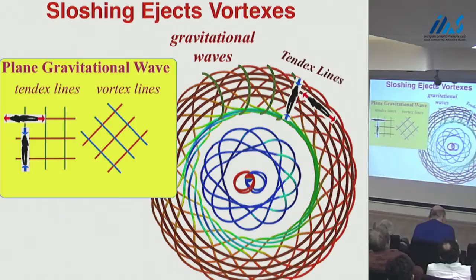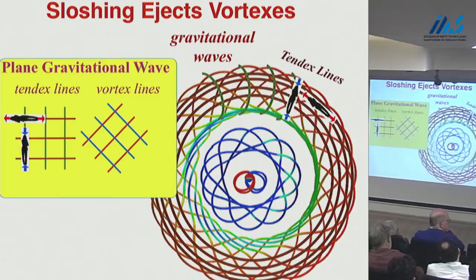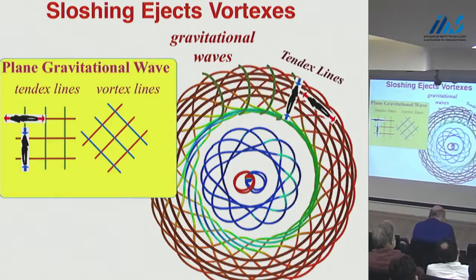Are these two fields enough to characterize the Riemann tensor? Yes — this is the entire Riemann tensor. Of course, first you had to choose a reference frame, a space-like foliation. Having done that, all information about the Riemann tensor is tied up in these two sets of field lines plus the choice of foliation. For me, this is a very powerful way to think about what goes on in space-time curvature, very much like what you do in electromagnetic theory.